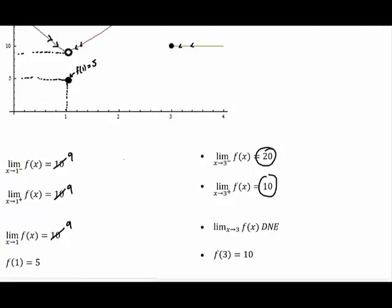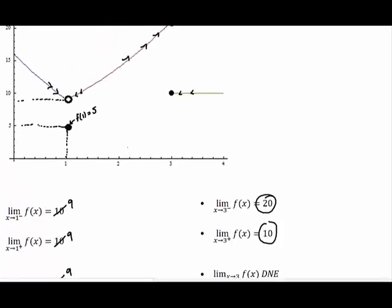And now the function itself, notice that the solid dot is on the right. So that is going to tell you that f of 3 is, in fact, 5. Ah, 5, 10, sorry. My bad. 10 right here.